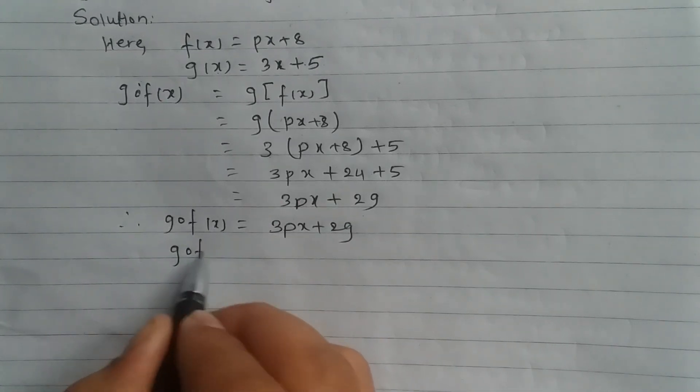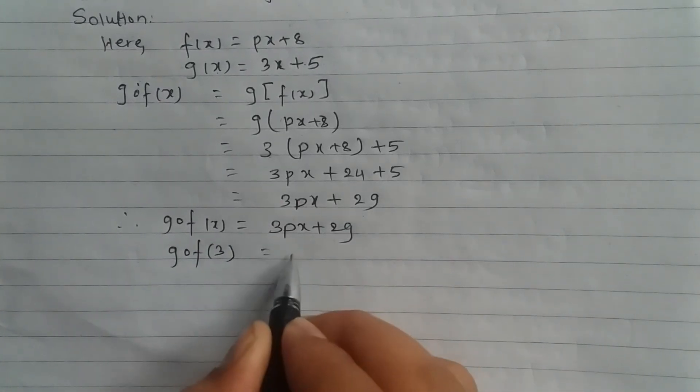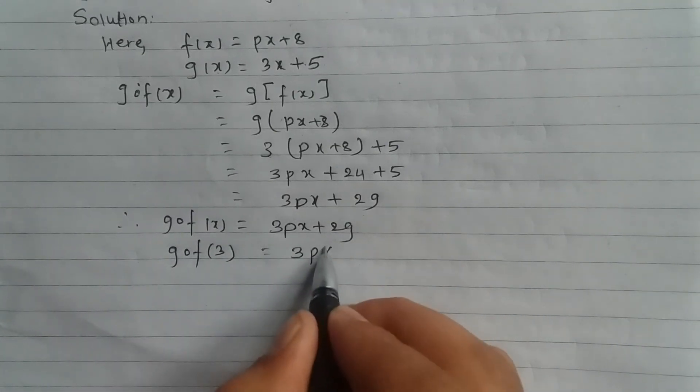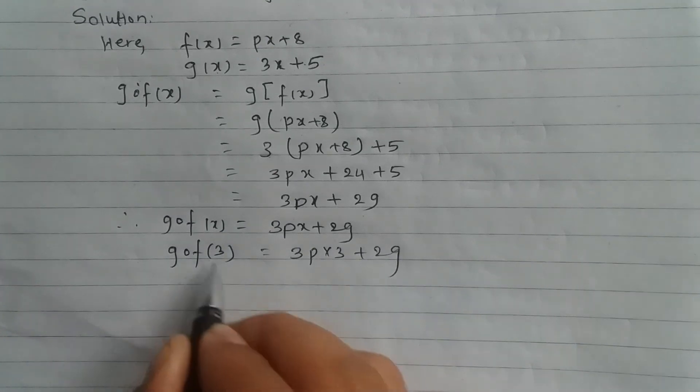Now, g composite f(3) means we replace x with 3. So 3p(3) + 29 = 9p + 29.